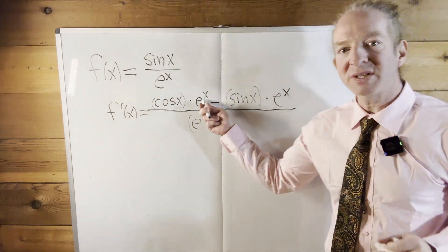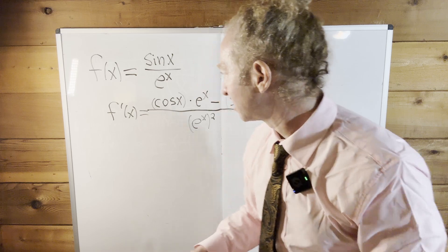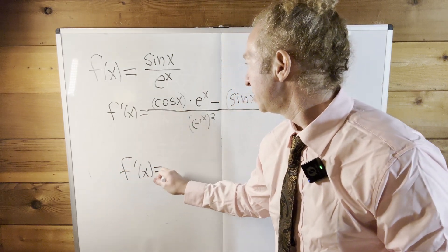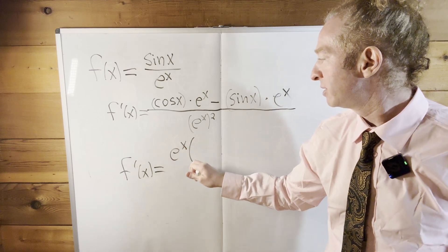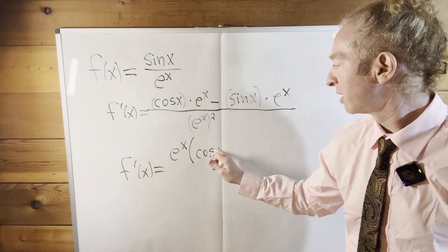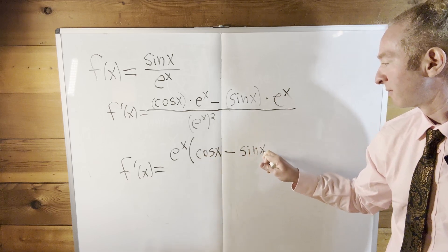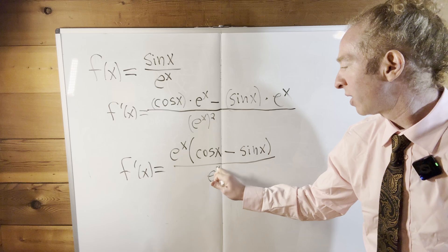And what we can do here, you might notice, is we can actually pull out or factor out an e to the x. So f prime of x is equal to, we can pull out this e to the x, parentheses, and then we have cosine x minus sine x, all over,